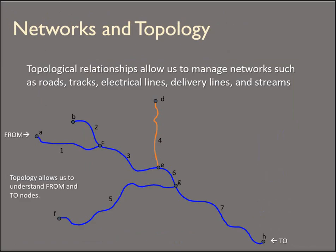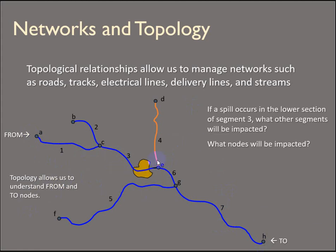Most importantly, topology allows us to manage networks. We can set directions on roads, pipelines, sewer lines, or streams — we can have from-and-to nodes so a stream has directionality. If a spill were to occur, we could model which stream segments are going to be impacted, with no impacts upstream. That directionality is what enables network analysis. Fire departments and UPS all use smart data with directionality built in.